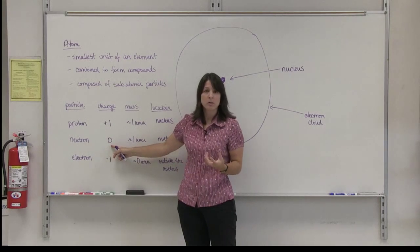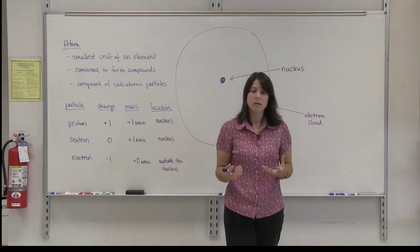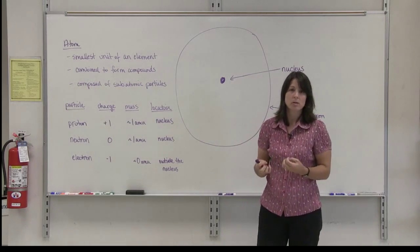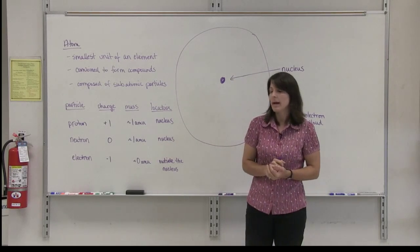Neutrons have a charge of zero. They are neutral. Their mass is approximately one amu as well. So protons and neutrons are about the same size, and it is also located in the nucleus of the atom.